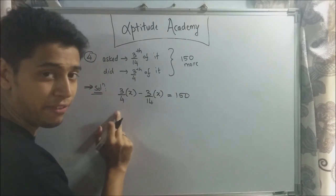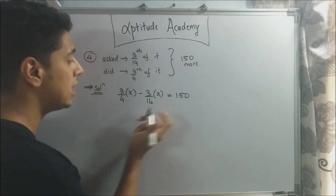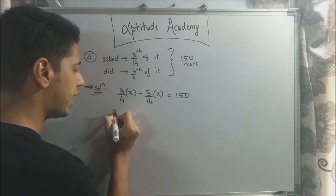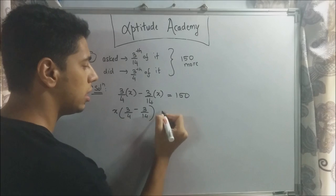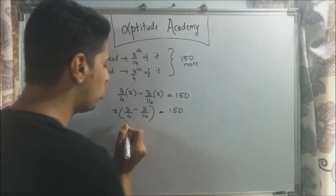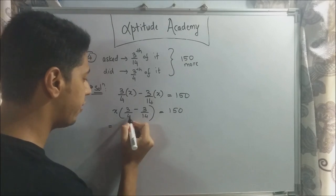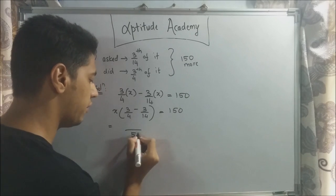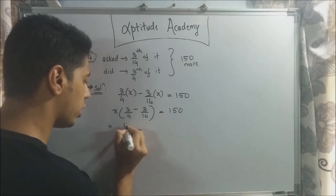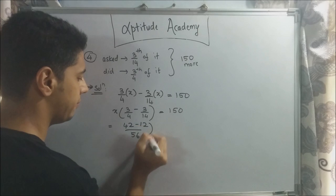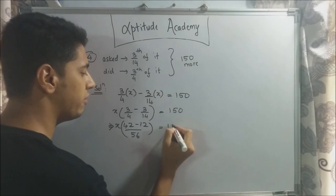Now, I'll just solve it again. So you'll take x common, 3 by 4 minus 3 by 14. Now, it's equal to 150. Now, don't find the LCM list, just multiply it directly. So if you find 4 into 14 is 56, so 56 is directly taken here. So 3 into 14 will be 42, minus 12. This is x, it's equal to 150. Now, 42 minus 12 is 30. So x into 30 divided by 56 is equal to 150.